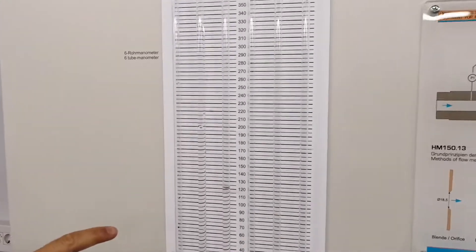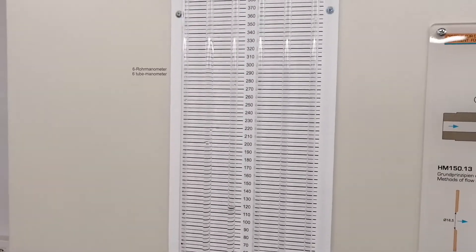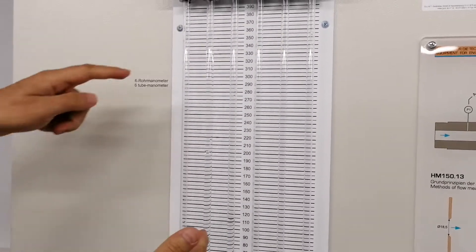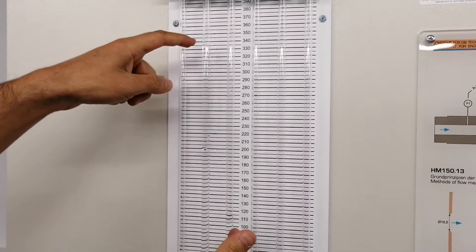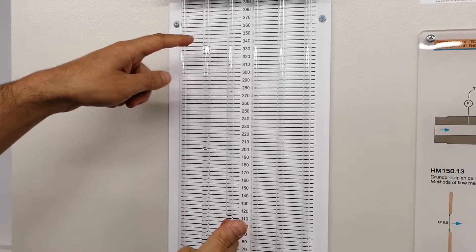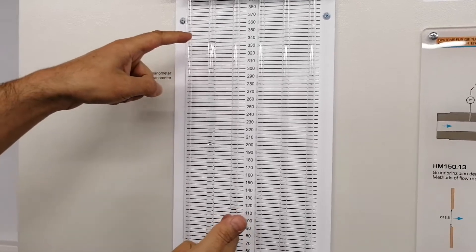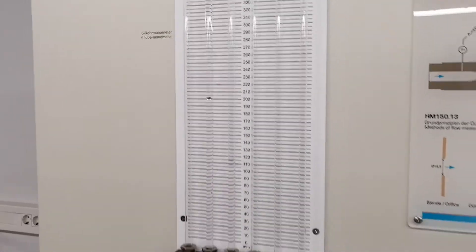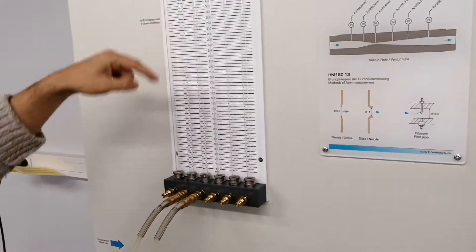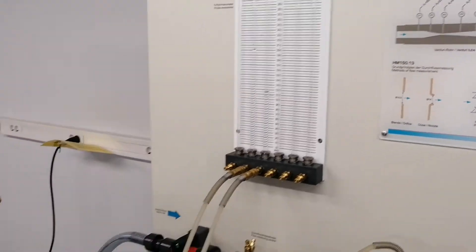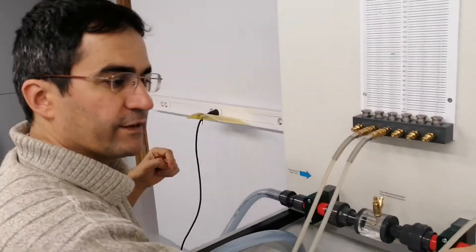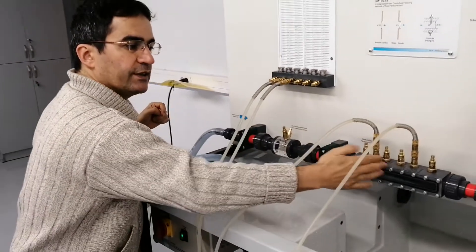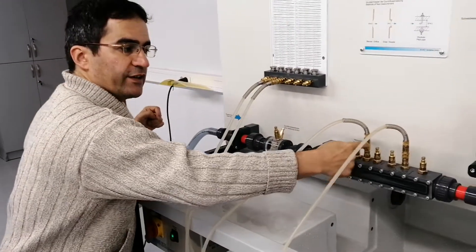If I increase the flow rate, the differences are higher, as you can see. This pressure difference occurs because the venturi nozzle has different section areas at different points.